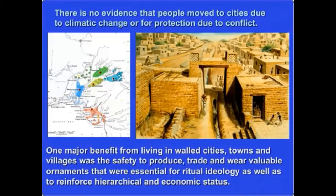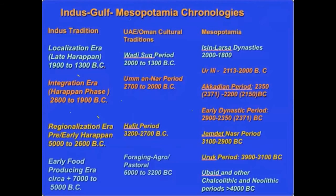Ornaments would have been used to reinforce hierarchy, status, and economic status, but ritual is one of the key elements to emphasize. The overall chronology starts from the early food-producing era, about 7000 BC in the Indus Valley regions, continuing through the early Harappan or regionalization era, the Harappa phase, and then the late Harappa phase. These periods can also be correlated to periods in Oman, the UAE, and Mesopotamia.